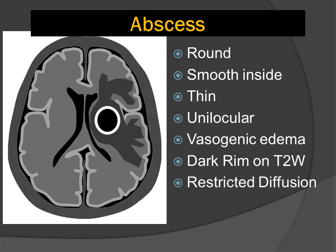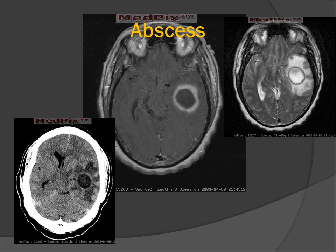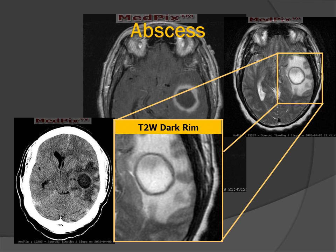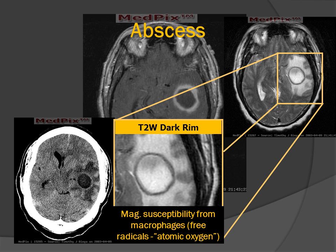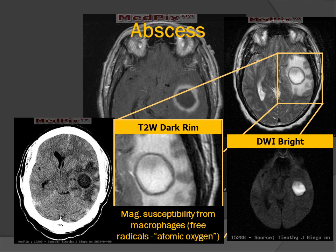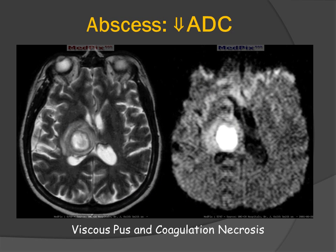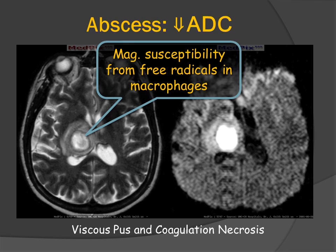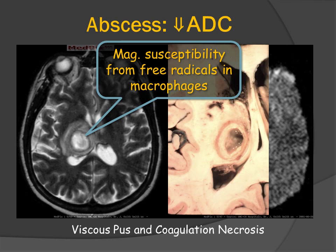Abscesses are usually round and smooth with a thin rim, unilocular, with surrounding vasogenic edema that is typically very extensive. The rim may be hypointense on T2, and there will be restricted diffusion on DWI or ADC map. Abscesses have a smooth inner margin because pathologically we're looking at the rim of granulation tissue surrounding pus and coagulation necrosis. The T2 hypointensity is often attributed to macrophages containing free radicals or atomic oxygen. On this pathologic example, we can see the very smooth margin and the white cell mass and coagulation necrosis in the center.